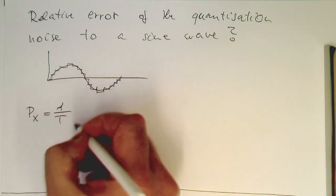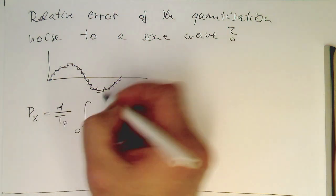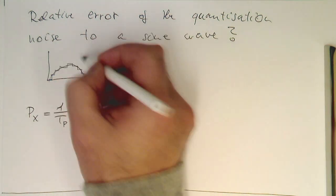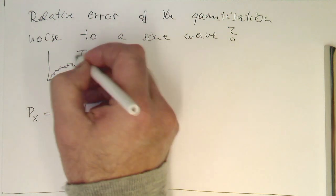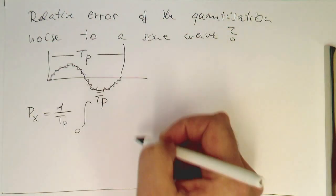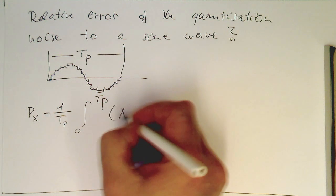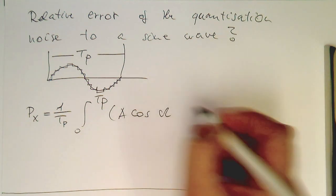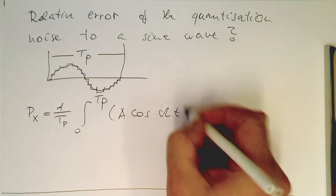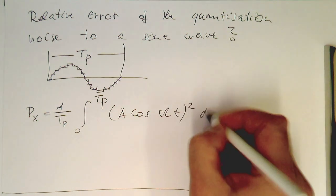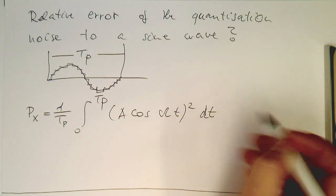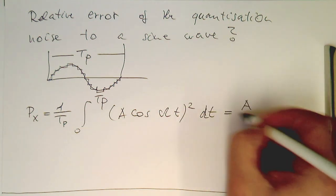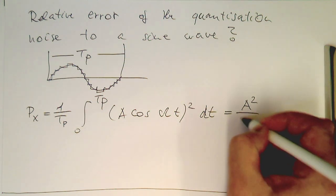So what's the power of a sine wave? This is just defined as one over t_p, then integral over t_p. So t_p means one period, and then we take a cosine wave as usually in signal processing, and we square this dt. Without boring you with details here, the result is just A squared half.